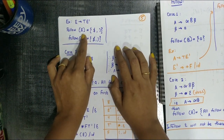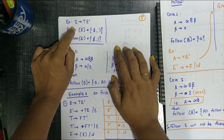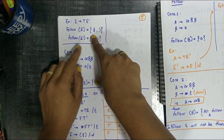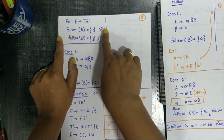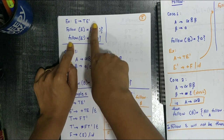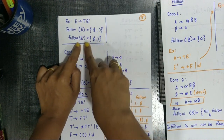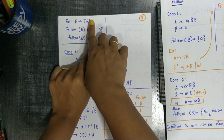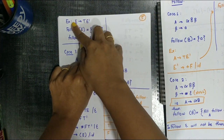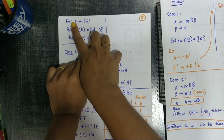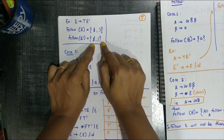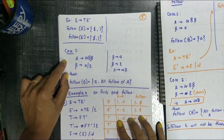For example: E tends to T·E'. Follow(E): there is no symbol after E, so dollar ($) is the symbol — Follow(E) = {$, (}. Then for E': there is no symbol after E' either, so E' follows E's followers. Therefore Follow(E') = Follow(E) = {$, (}.